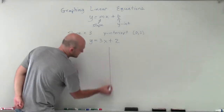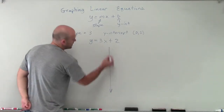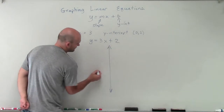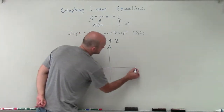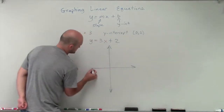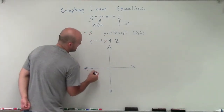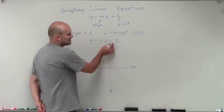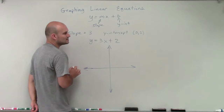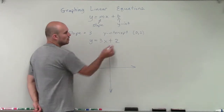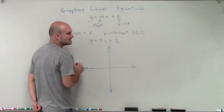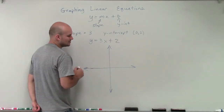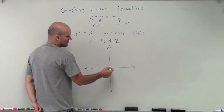To graph this, the first thing we're going to do is start at our y-intercept. Our y-intercept is 2, which is the point (0, 2).